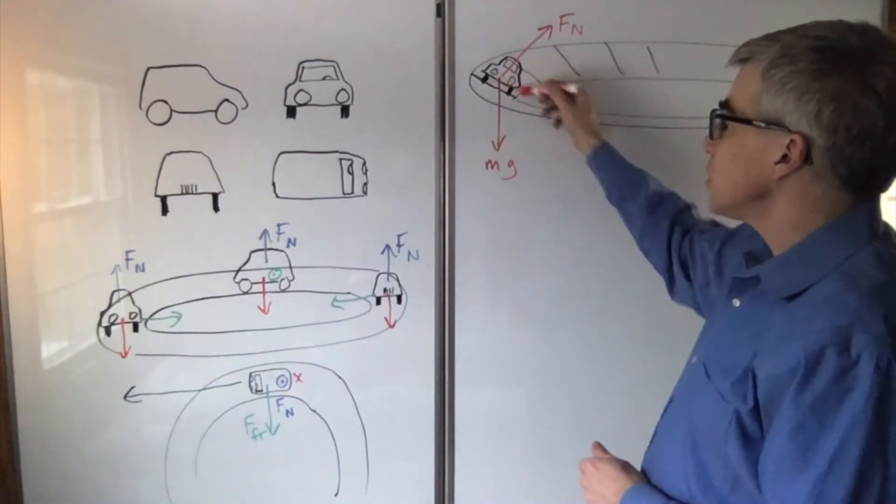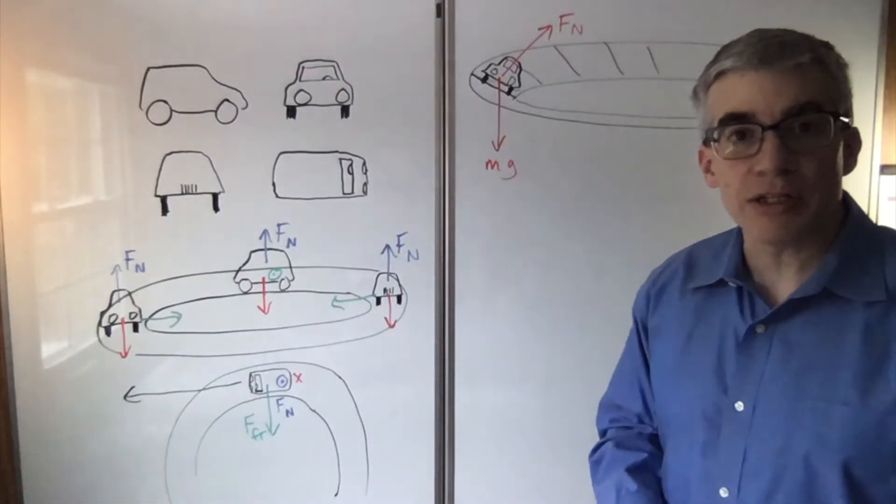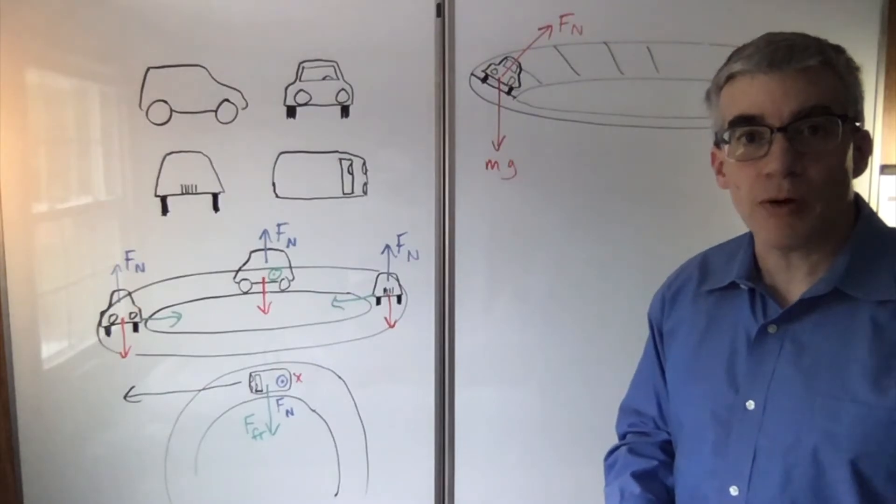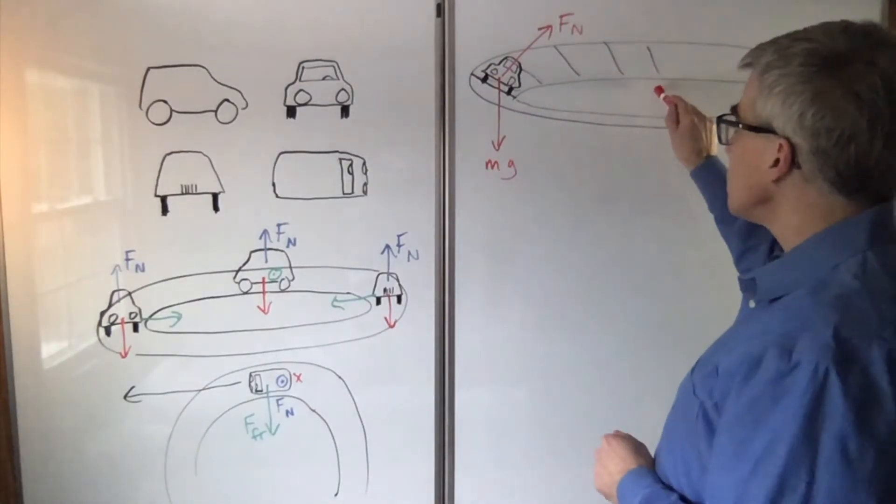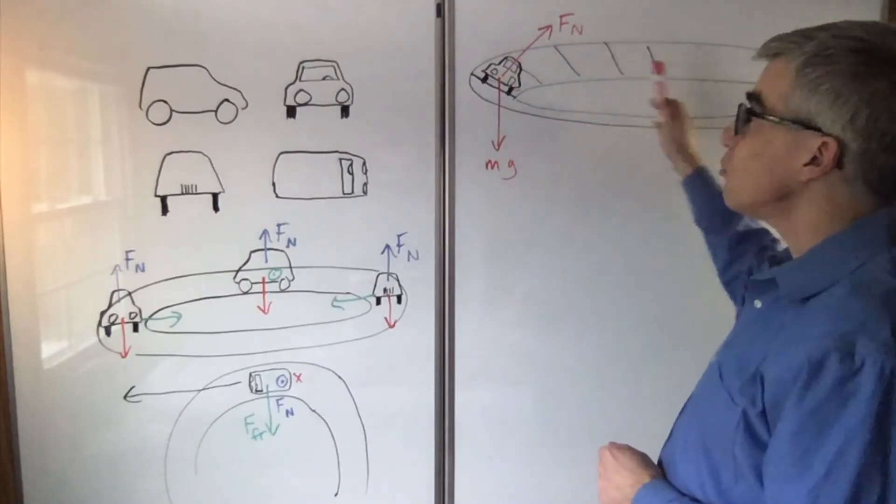If you're not going at the right speed, you could have friction either uphill or downhill, depending on whether you're going too fast or too slow. But the center of the circle is here, so centripetal force will be whatever points that way.